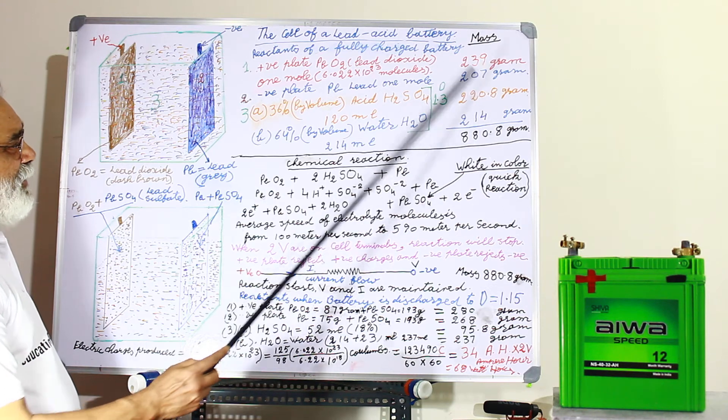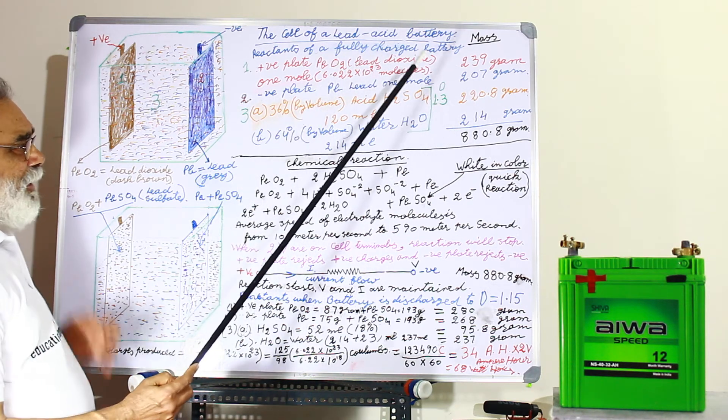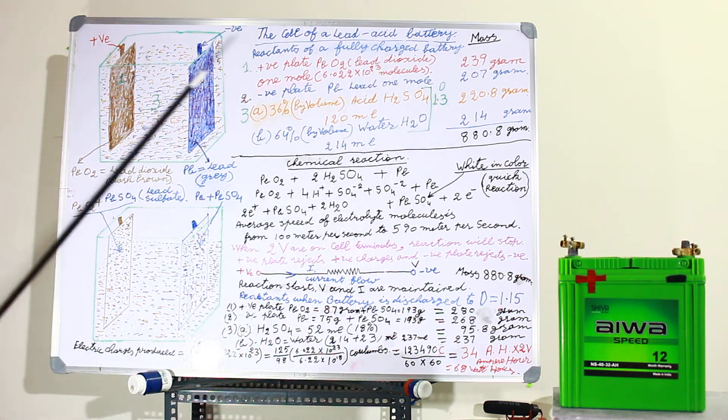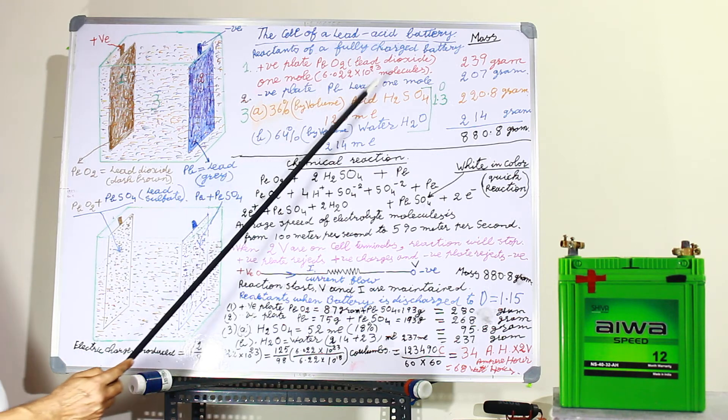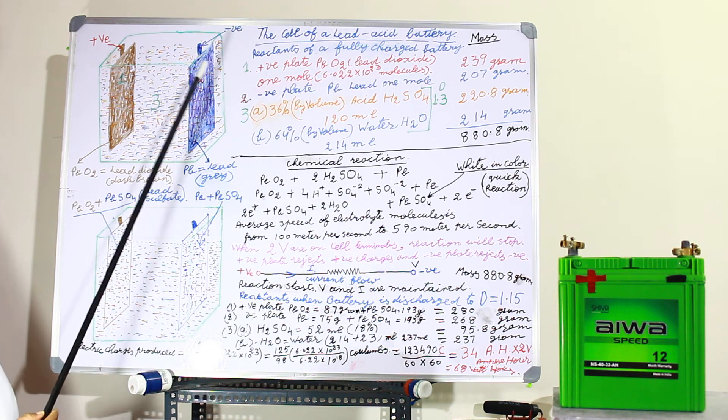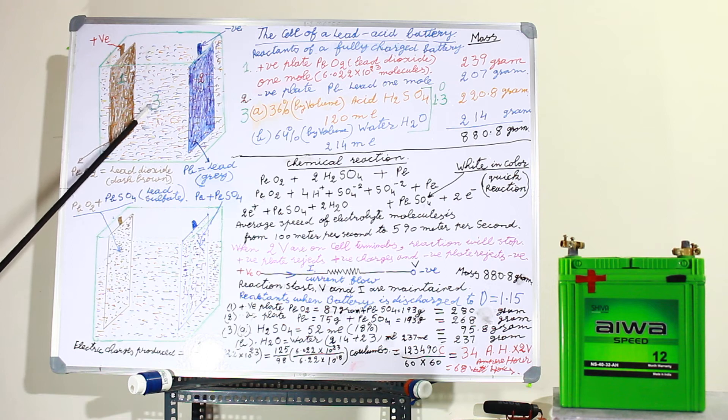Next is the second, the negative plate. It is lead. It is also one mole. It is 207 grams. It is grey in colour. And there is number 3.